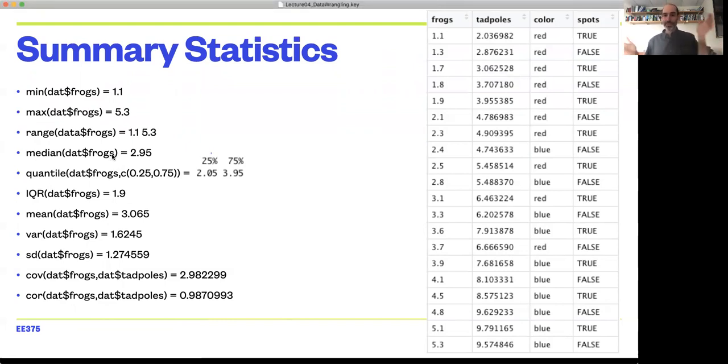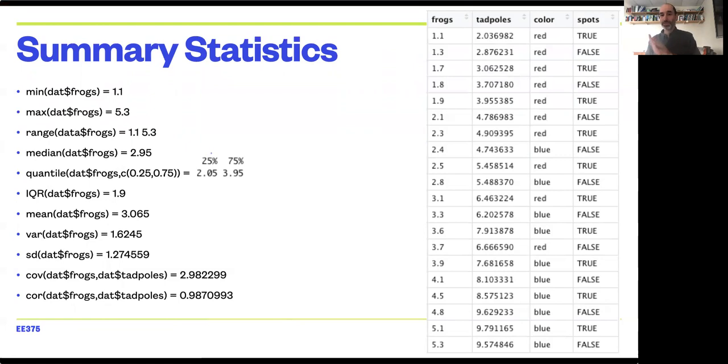The median function tells us about the most central value. So if you were to sort all of your data in order and ask, where is the 50th percentile? So what value do you have exactly half as many values ahead of you and half as many below you?